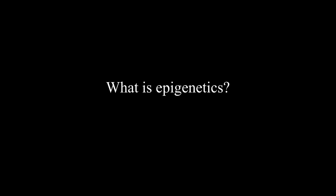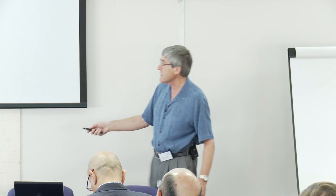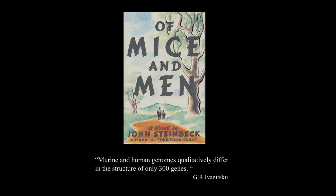What is epigenetics? A lot of newspapers give the misleading impression that DNA is somehow a blueprint for an organism — this word 'blueprint' crops up again and again. It is clearly fallacious. If you compare our DNA with that of, say, a mouse, it's not a lot different. Murine and human genomes qualitatively differ in the structure of only around 300 genes, and obviously there are more than 300 ways in which a mouse and a human differ.